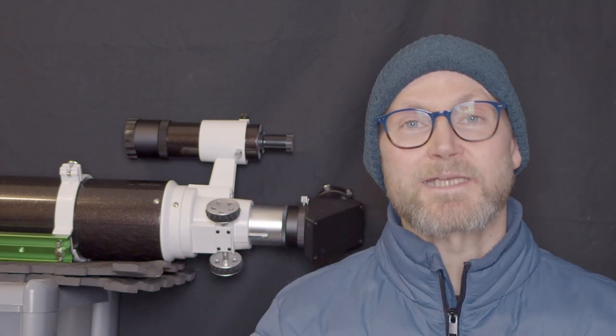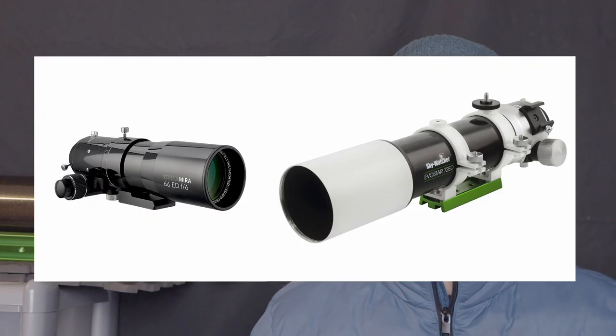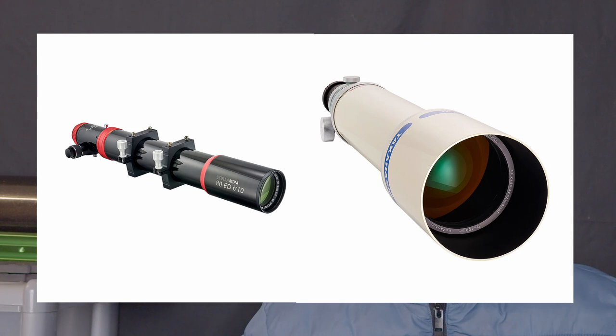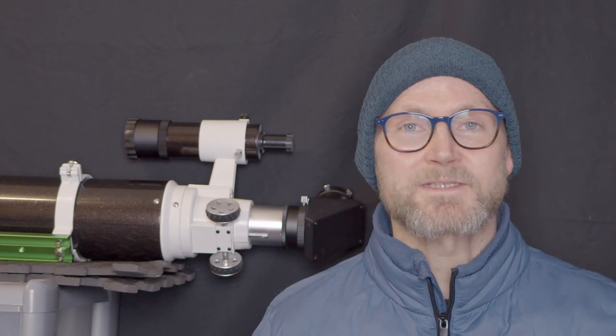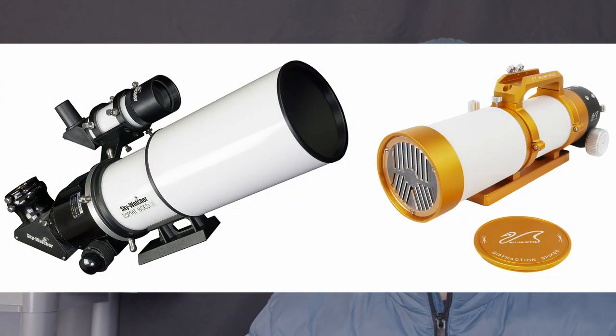If you want to go straight into imaging, go straight for something like one of the more affordable ED doublets that are around three, four, five hundred pounds, euros, dollars. And if you're a discerning observer, go for a longer tube ED doublet refractor. And if you're a discerning deep sky imager, look at one of the triplet refractors, apochromatic refractor, they're commonly known as.